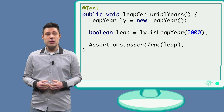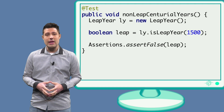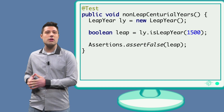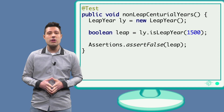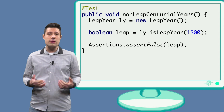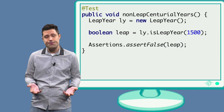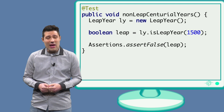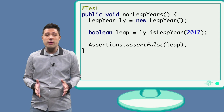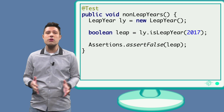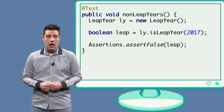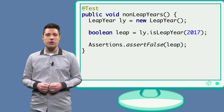Now we get to partitions where years are not leap. The third partition is about years that are centurial and not leap — for example, 1500. In this case, we expect the method to return false. And finally, years that are not centurial and not leap, such as 2017 — we also expect the method to return false.